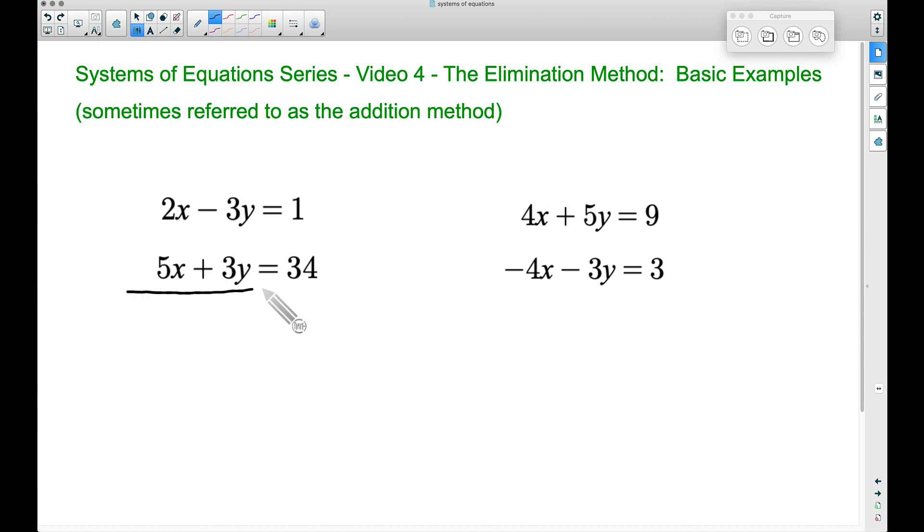Notice that if I draw a line here and combine like terms with these things that are lined up: 2x and 5x, they're both positive, so if we combine those we get 7x. Negative 3y plus 3y is zero—they cancel out, they get eliminated. Then if we bring down our equals and combine the 1 and 34, we get 35 because they are both positive.